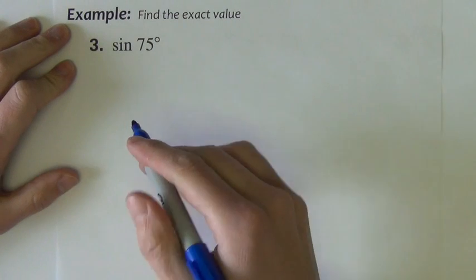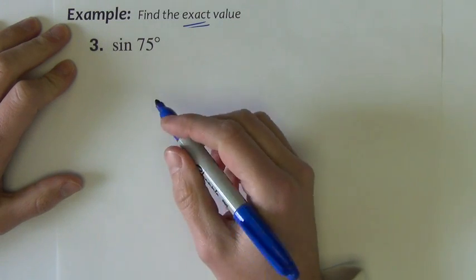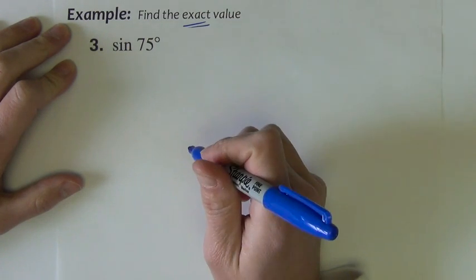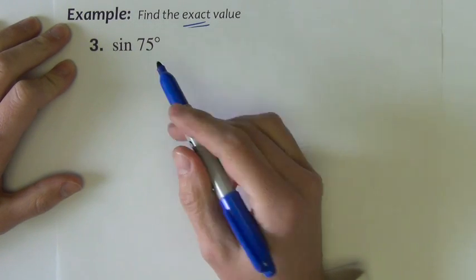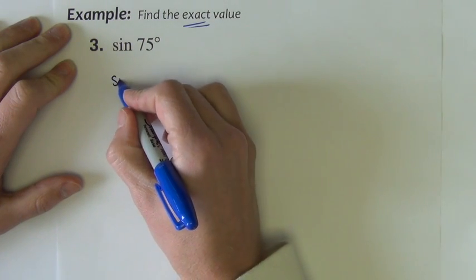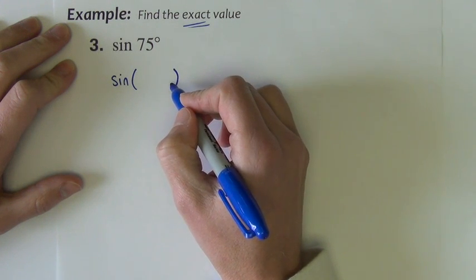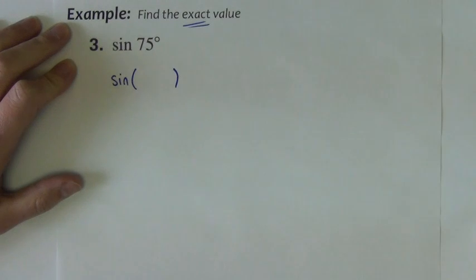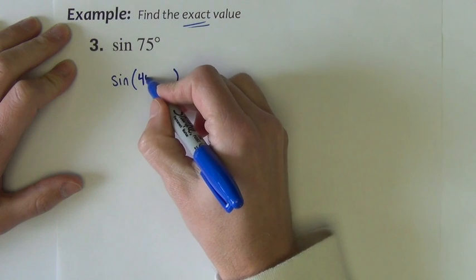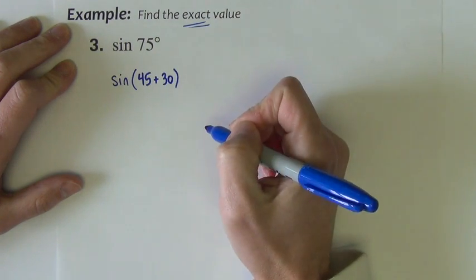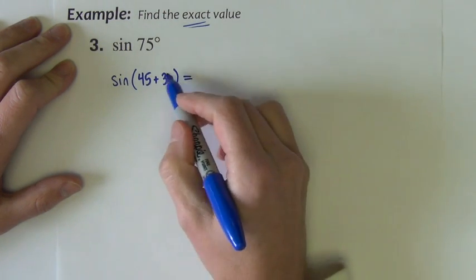In this first example, we're asked to find the exact value of the sine of 75 degrees. So we don't want to just go to the calculator and type sine 75, enter, and get the decimal. In order to find the exact value of this, we're going to use these new sum and difference formulas. What I need to begin by doing is coming up with a way to either add two numbers, two angles, or subtract two angles to give 75 degrees. And I want to pick two angles that are on the unit circle. So I'm going to choose 45 plus 30.